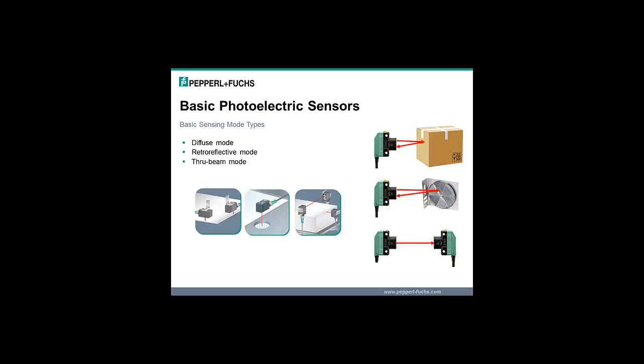One sensing mode type is diffuse mode. In diffuse mode, a sensor emits light that is reflected at various angles by an object back to the sensor's receiver. Another sensing mode type is retroreflective mode, in which a sensor emits light that is returned back to the sensor by a retroreflector, and when an object obstructs the light beam, the sensor's output changes state. The last basic sensing mode is through beam mode, in which the sensor's transmitter and receiver are in two different housings and an object obstructs the beam to cause the output to change state.